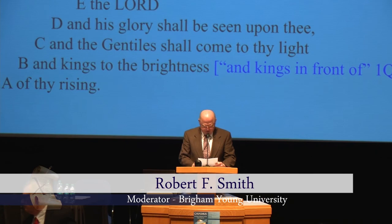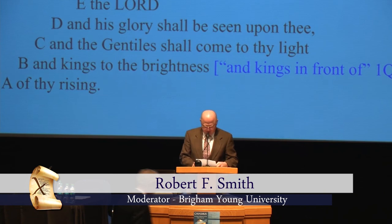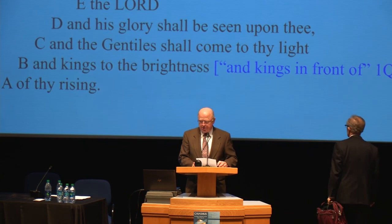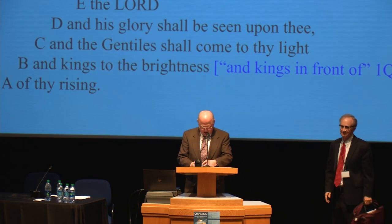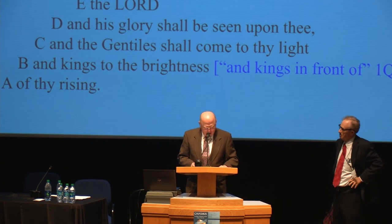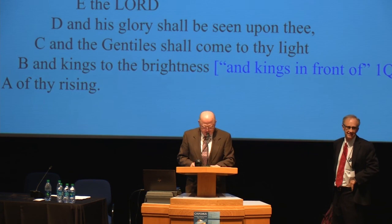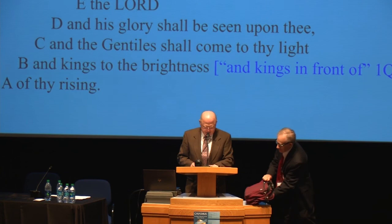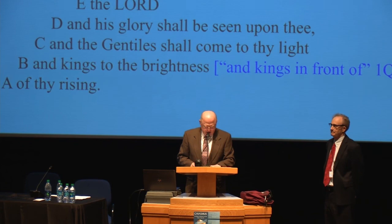Royal Skousen is Professor of Linguistics and English Language at BYU. He received his PhD in Linguistics at the University of Illinois and was an Assistant Professor at the University of Texas at Austin before coming to BYU. He has been a Visiting Professor at UC San Diego, a Fulbright Lecturer at the University of Tampere, Finland, and a Research Fellow at the Max Planck Institute for Psycholinguistics in Nijmegen, Holland. He has been Editor of the Book of Mormon Critical Text Project since 1988. His 2009 Yale University Press Edition of the Book of Mormon is the most important edition of that book since 1830.